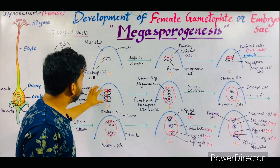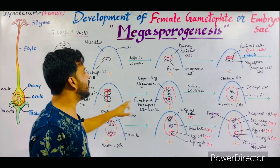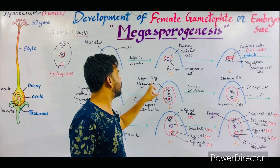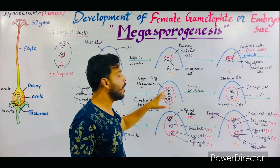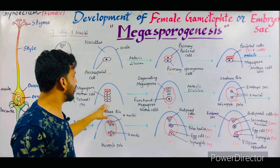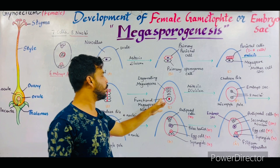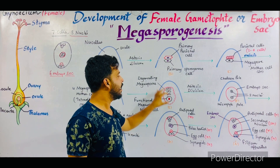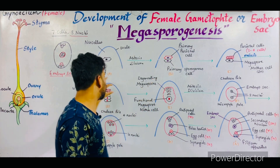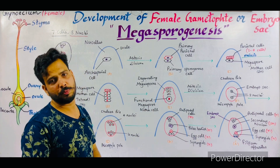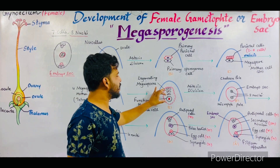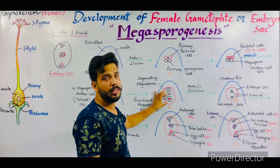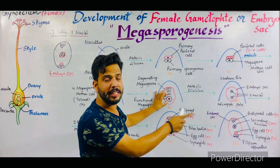Now in these four cells, three cells degenerate — these are the degenerating megaspores — while one single cell is converted into the functional megaspore. This is the functional megaspore cell, and these three cells are the degenerating megaspores. Finally, this functional megaspore will produce seven cells and eight nuclei inside the embryo sac.